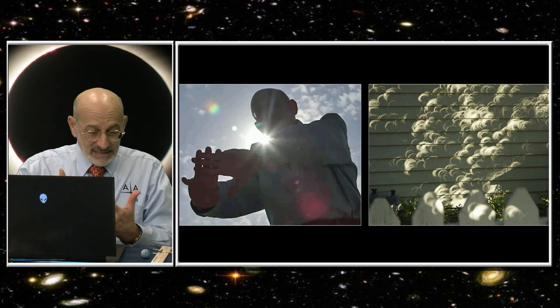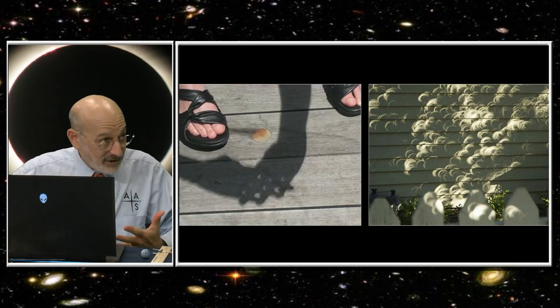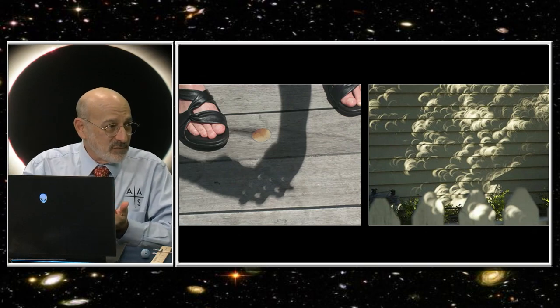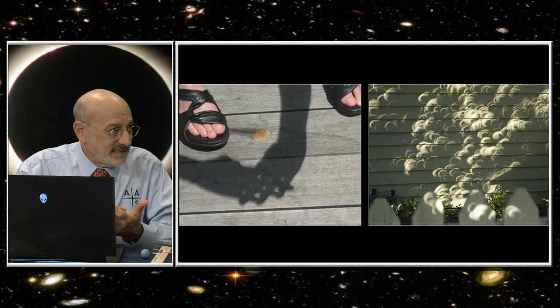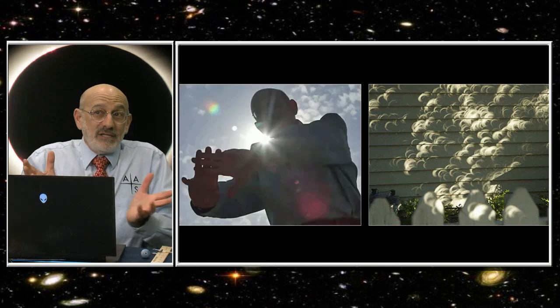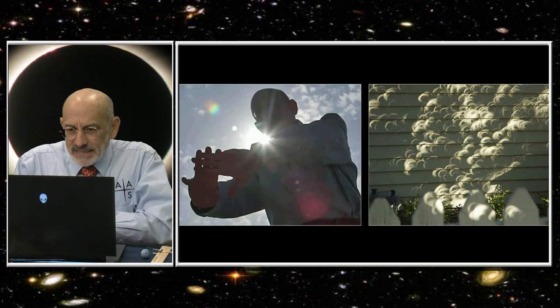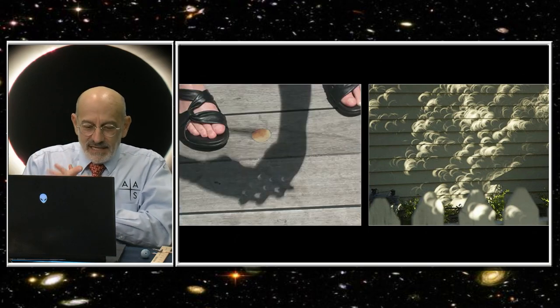One thing to keep in mind is that if you are using pinhole projection and you've got the sun at your back, as soon as the image goes away because it got dark, you turn around and look up. You can't use pinhole projection for totality. There's not enough light to get through the pinhole, and anyway you don't need to. You can look at it directly.